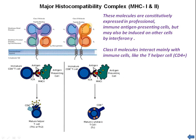MHC molecules are of two types, MHC I and MHC II. These molecules are consistently expressed in professional antigen-presenting cells but may also be induced by other cells as required. They interact with immune cells like T cells and help in T cell maturation. When activated, they can mature helper T cells so that the immune response is increased, helping to protect the body from invading organisms.